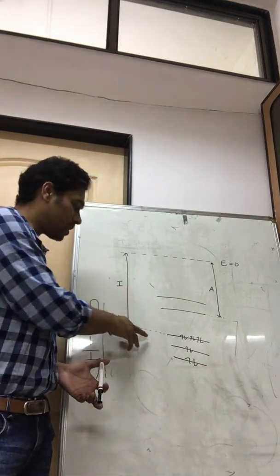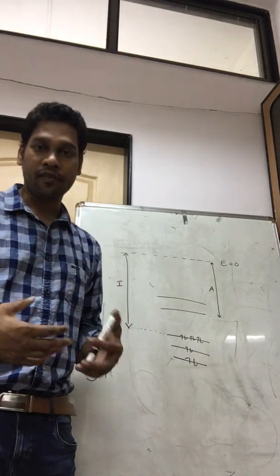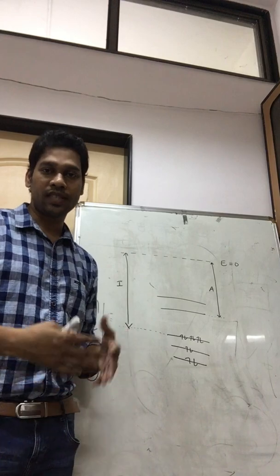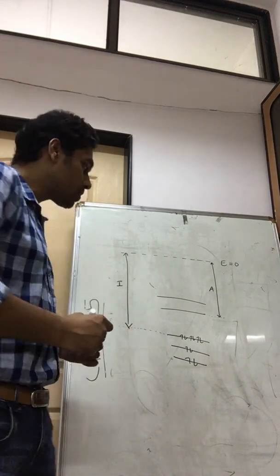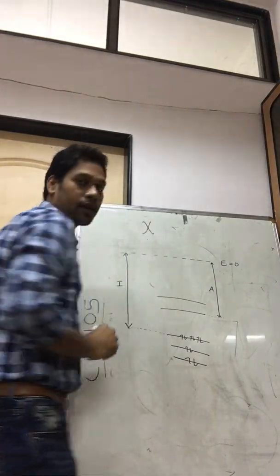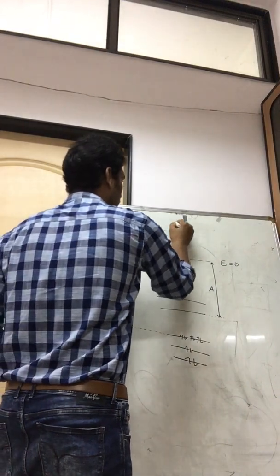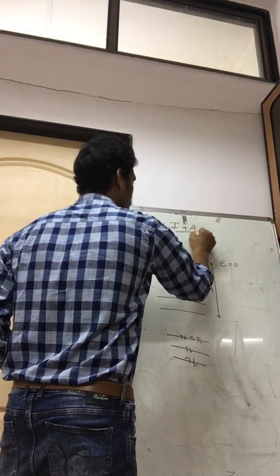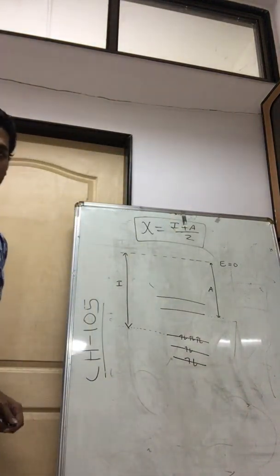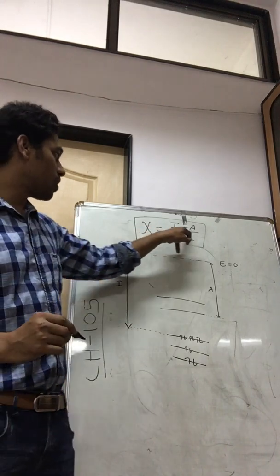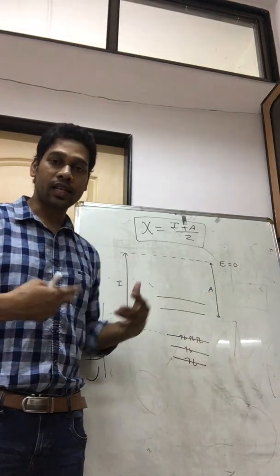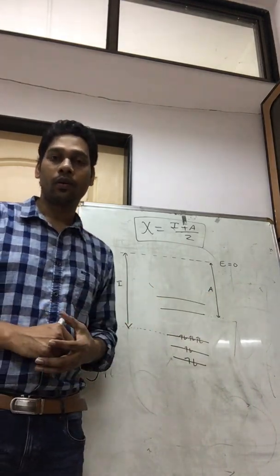These two values — ionization energy as well as electron affinity — one can experimentally find out. But what is electronegativity, which we generally hear about in all the textbooks? If you know ionization energy and electron affinity, one can actually theoretically find out what is electronegativity.